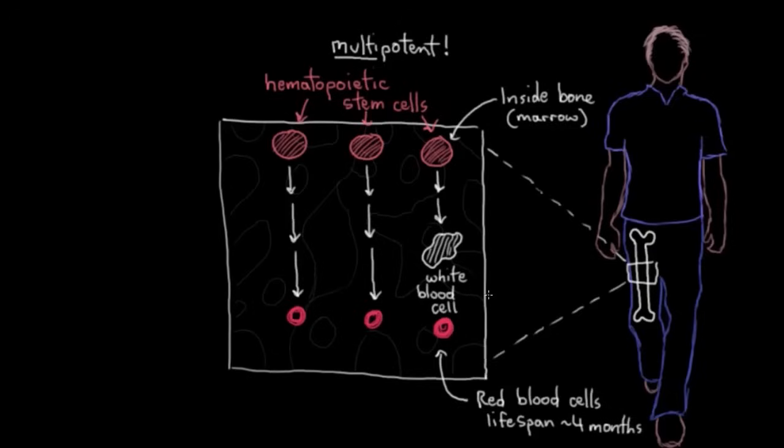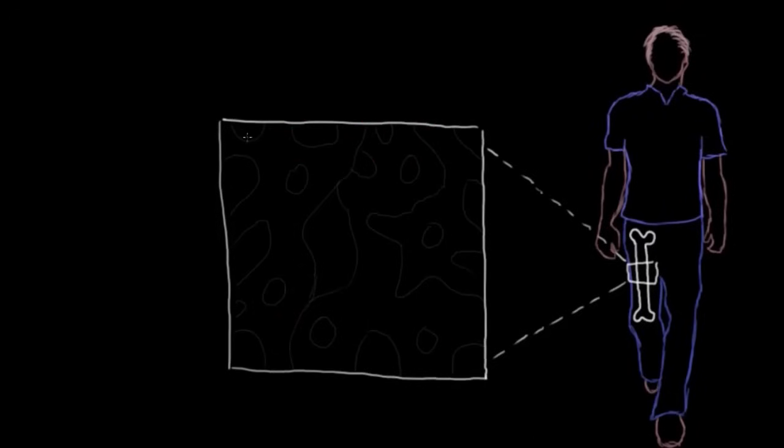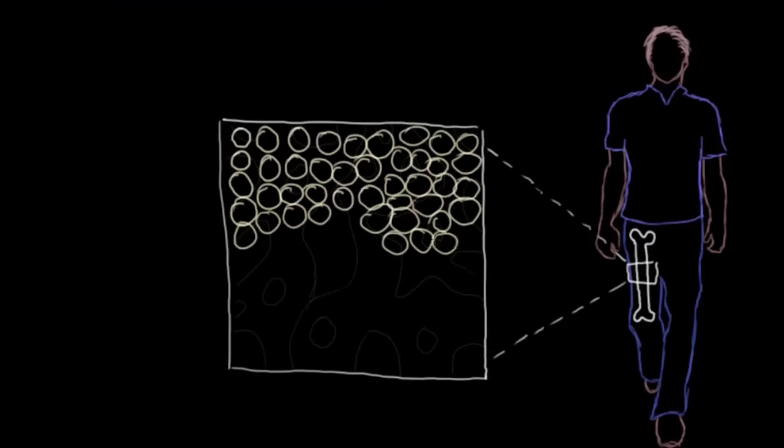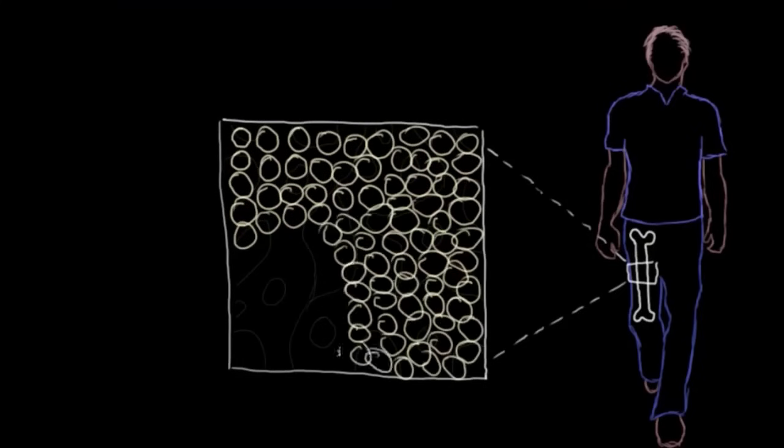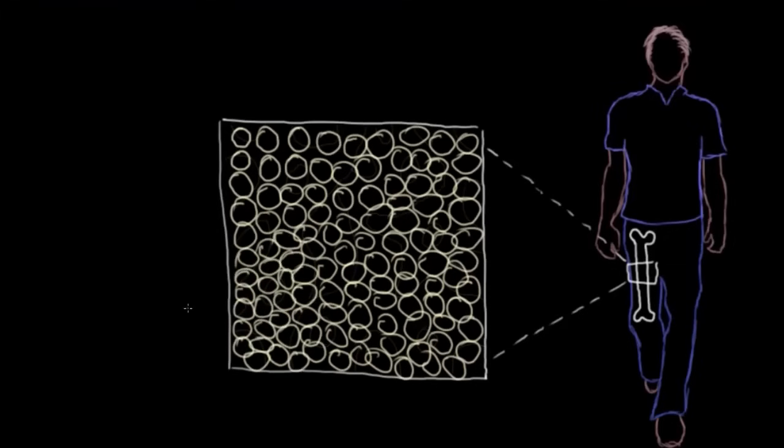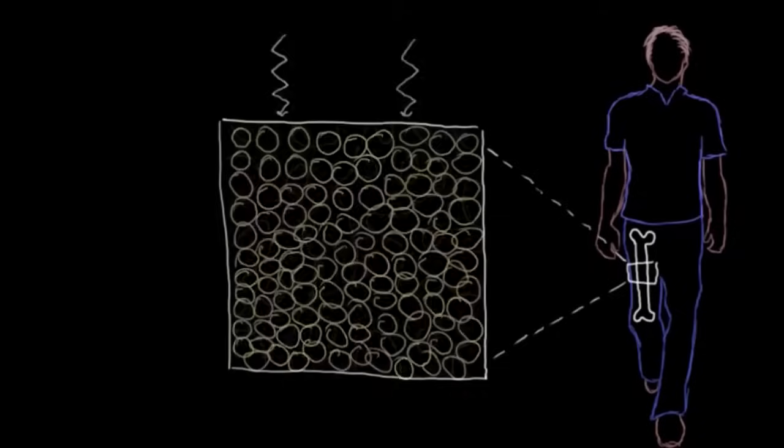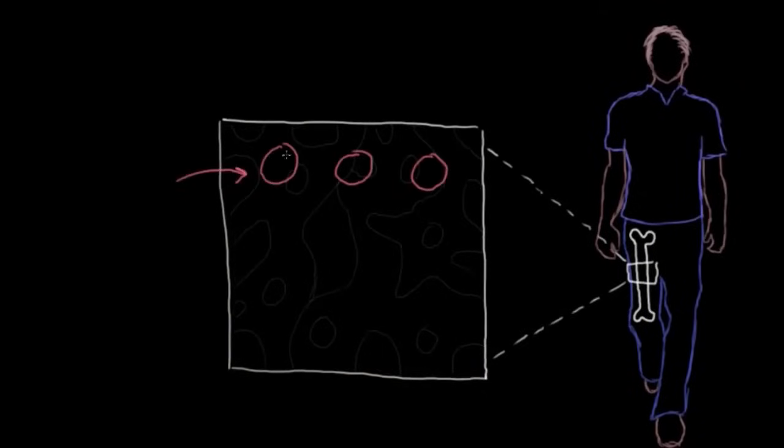And for a more clinical example, with blood diseases like leukemia, certain blood cells will grow uncontrollably within a patient's bone marrow. And it actually crowds out their healthy stem cells here from being able to produce enough blood cells. So as part of treatment, once the leukemia cells are cleared from the bone marrow with usually chemotherapy or radiation, doctors can actually put more hematopoietic stem cells back into the bone marrow that then go on to produce normal amounts of blood for the person again.